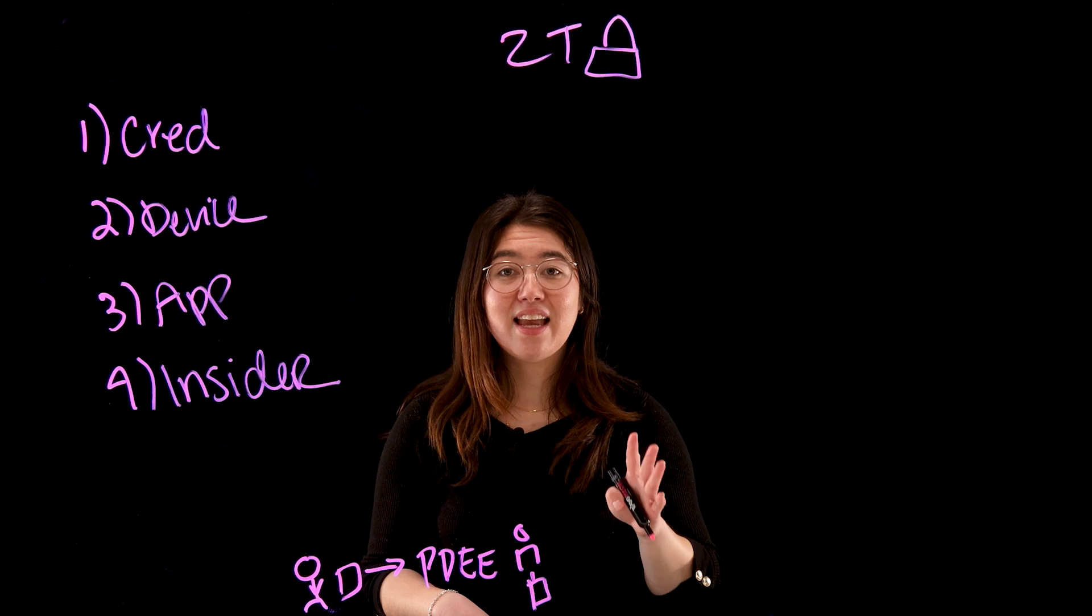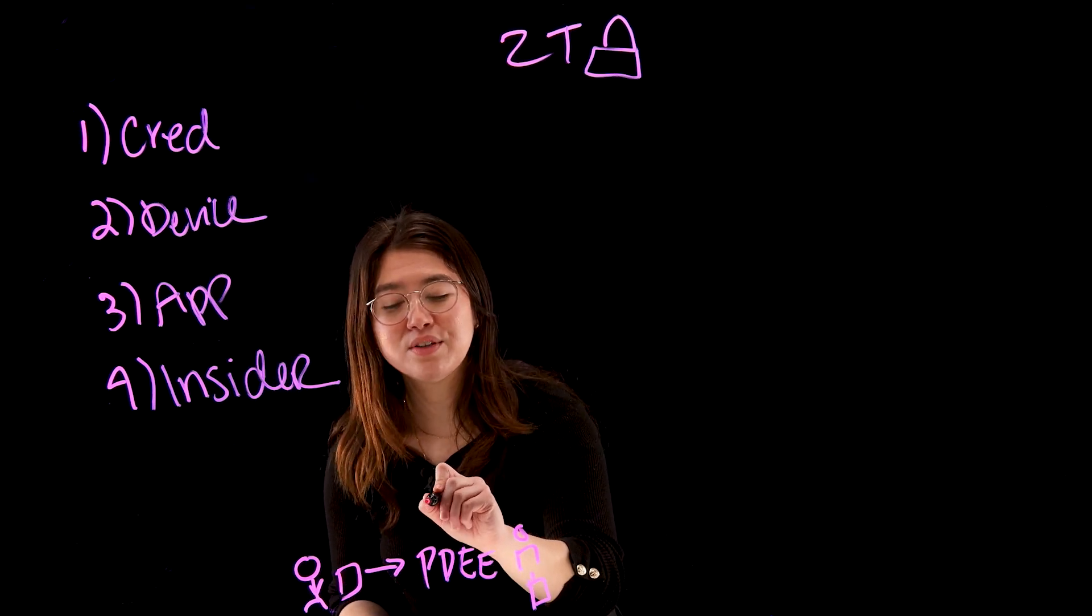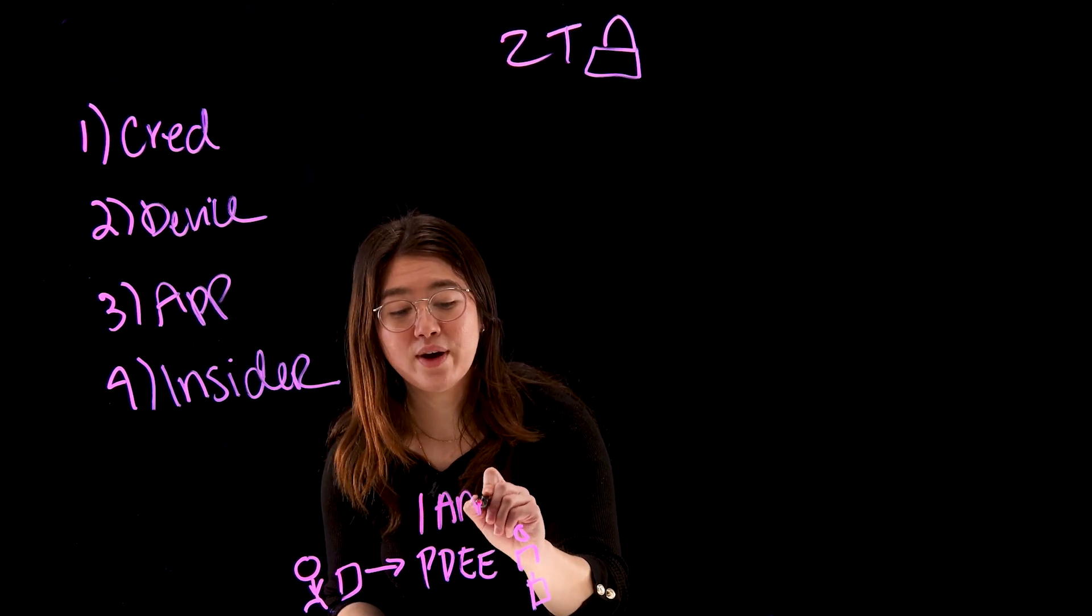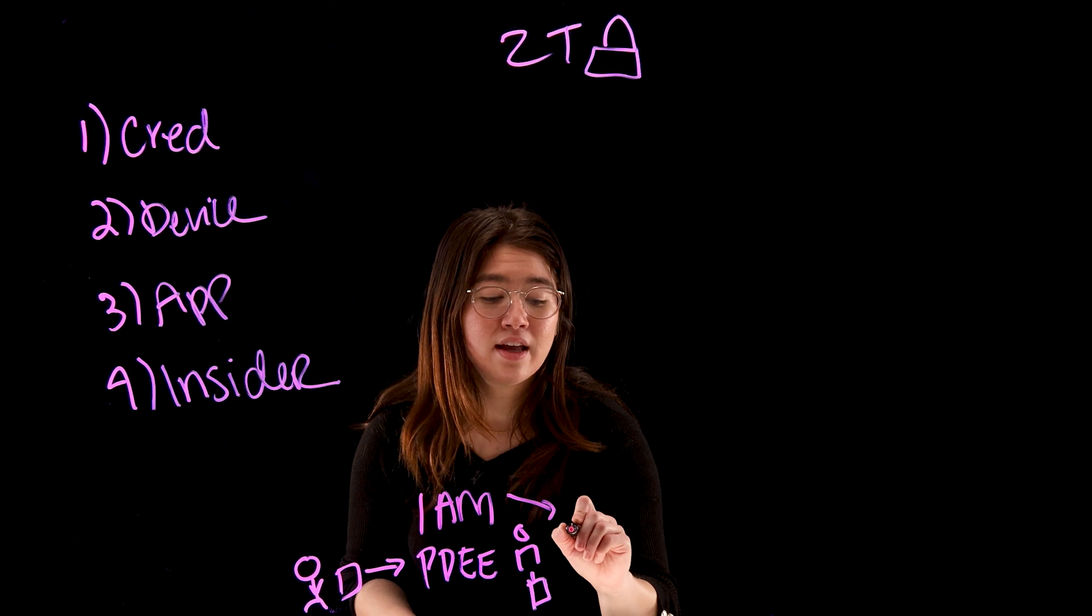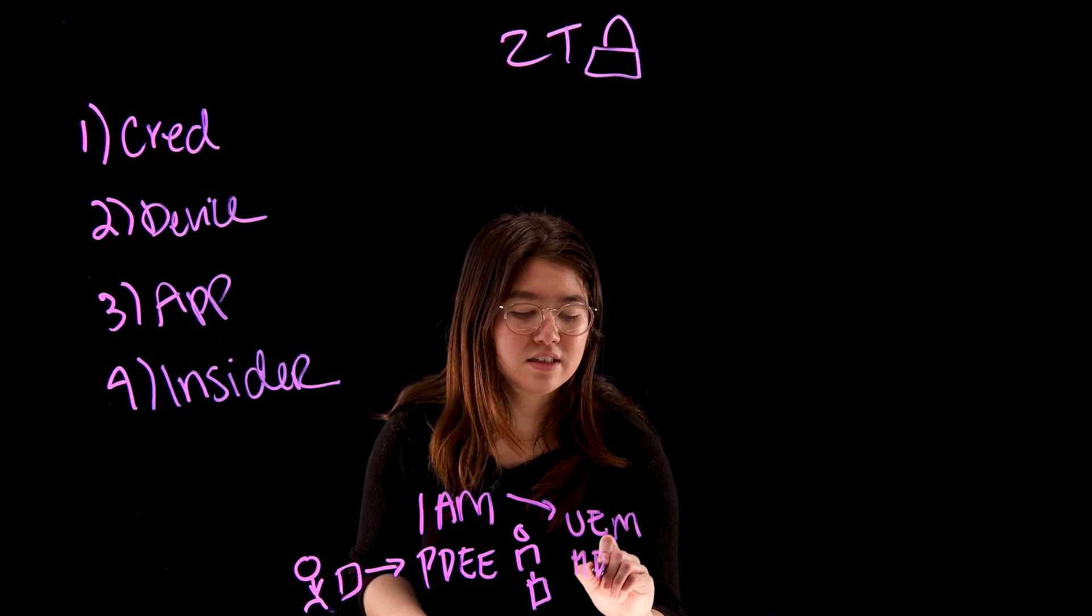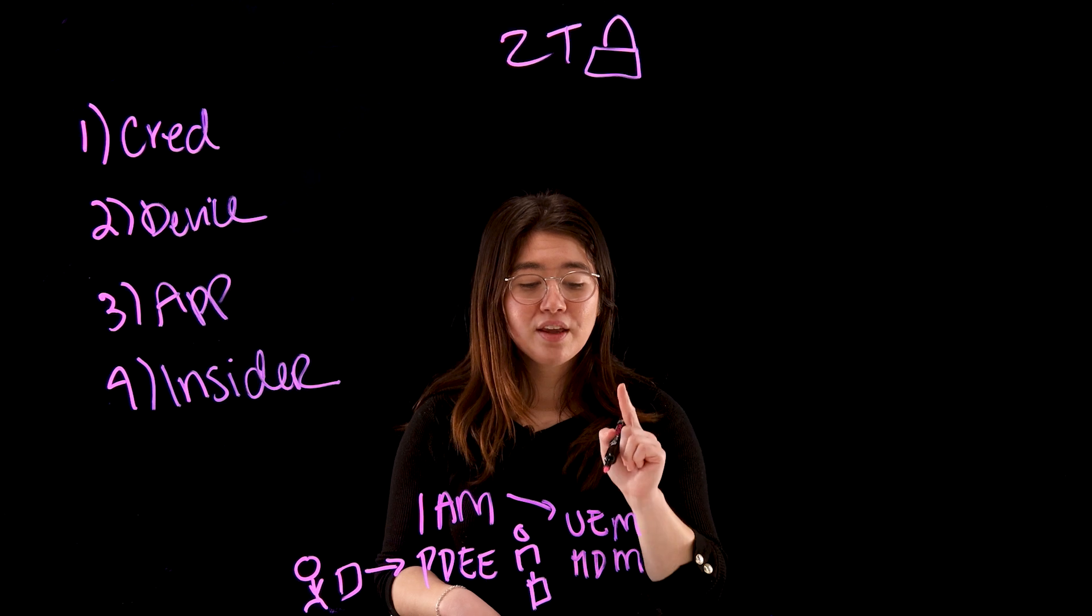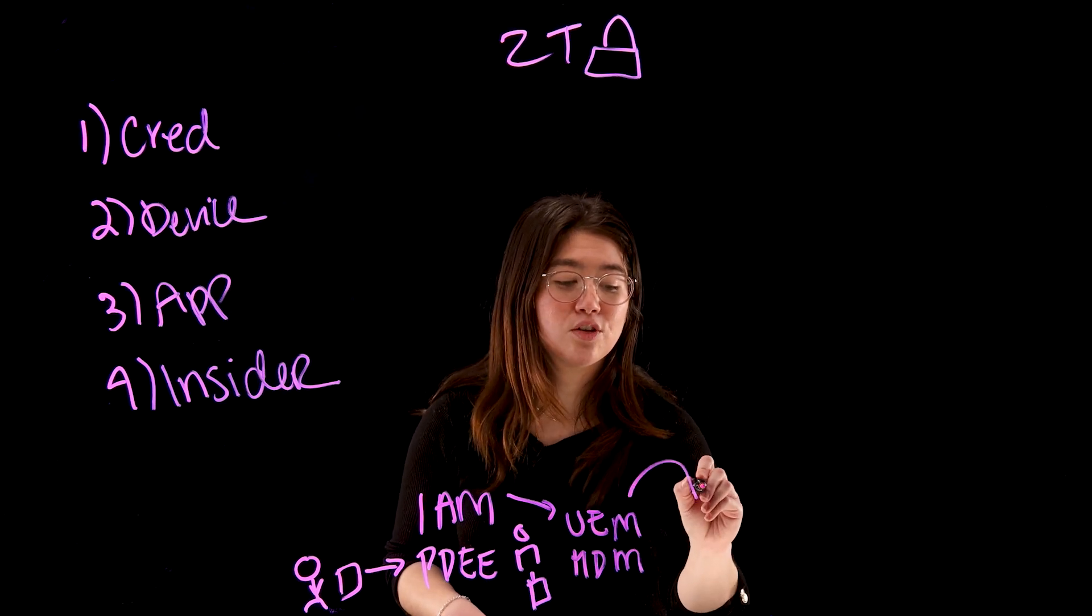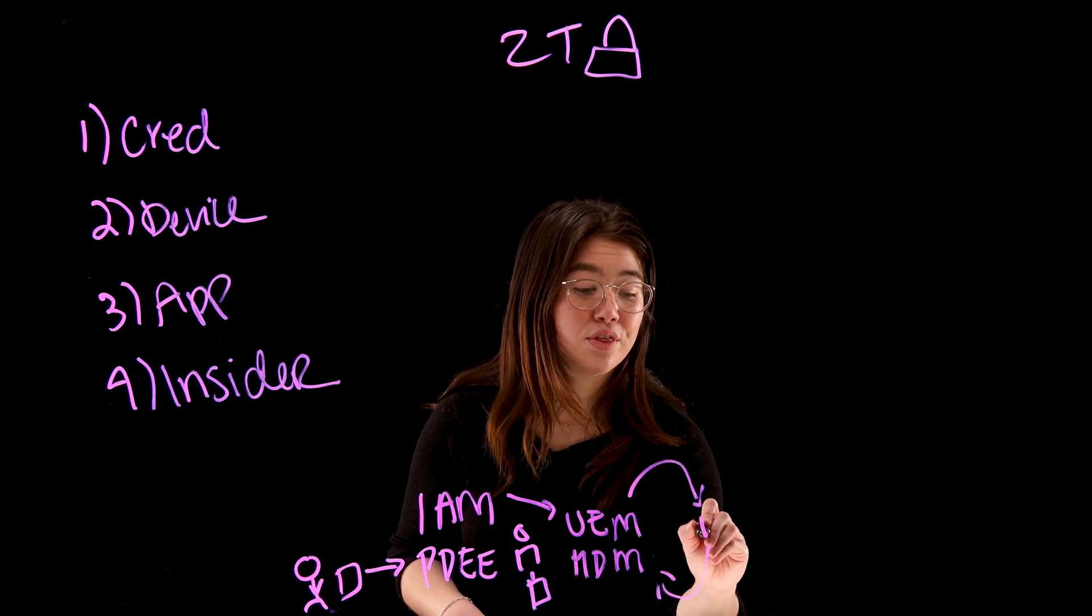These evaluations take information from the phone's identity and access management software, which is pulling data from the unified endpoint management software and mobile device management software on the device.